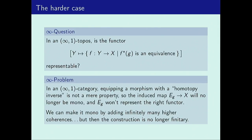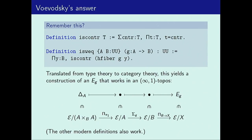It turns out to be wrong to do just that in an infinity-one category, for exactly the same reasons — if we equip something with a homotopy inverse, it ends up being not just a property but extra structure. So this induced map is not a monomorphism and doesn't represent the right functor. We could try to make it a monomorphism by adding higher coherences, but then it's no longer finitary. This is the problem that's solved by the coherent notion of equivalence that Vladimir gave us.